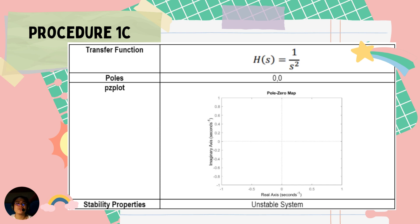For procedure 1c, we are given the transfer function H(s) = 1/s², with poles at the origin — both at (0, 0). For the PZ plot, the pole is located at 0.